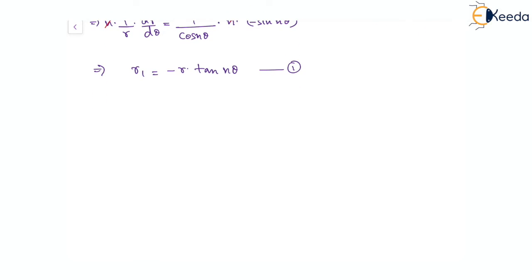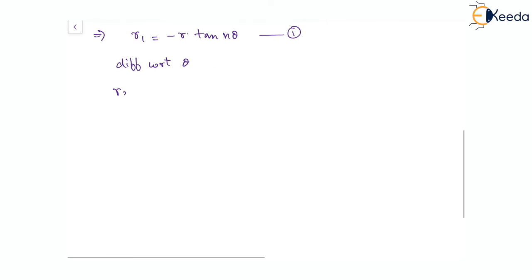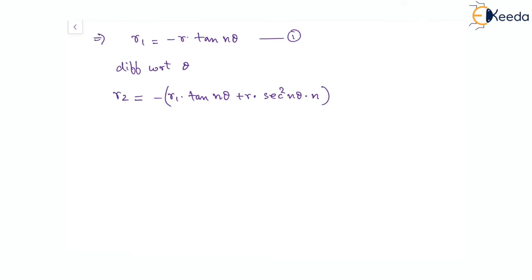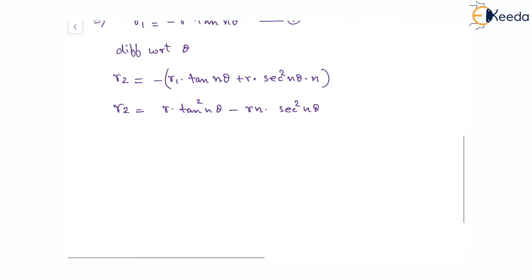Differentiating again with respect to theta using the product rule to find r2: r2 equals negative r1 times tan(n theta) minus r times sec squared(n theta) times n. Substituting r1 equal to negative r tan(n theta) from expression 1, the two negatives become positive, giving r2 equal to r tan squared(n theta) minus n r sec squared(n theta). This is expression number 2.